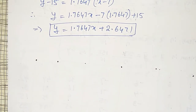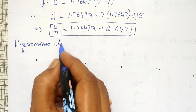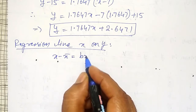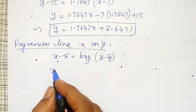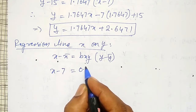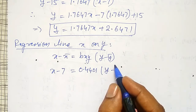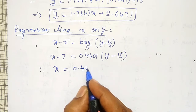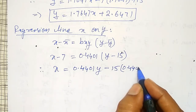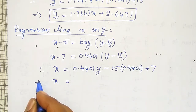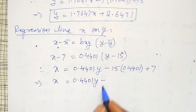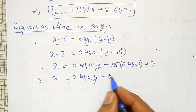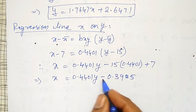Like that, regression line x on y is: x minus x̄ equals bxy times (y minus ȳ). That is, x minus 7 equals 0.4401 times (y minus 15). Simplifying: x equals 0.4401y minus 15 times 0.4401 plus 7. Therefore, the regression line x on y is x = 0.4401y + 0.3985.